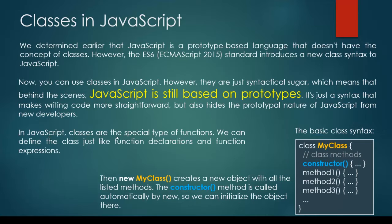In JavaScript, classes are a special type of functions. We can define a class just like function declarations and function expressions. Then we can instantiate the given class with the help of the new keyword, which creates a new object with all the listed methods. The constructor method is called automatically by the new keyword, so we can initialize the object there.